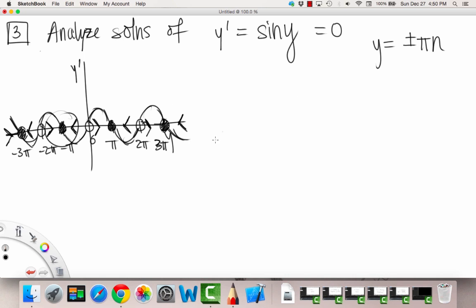So the phase line looks something like this. So we have, this is our y, and we have 2 pi. Here I'll label them right after. So 0, pi, 2 pi, negative pi, and negative 2 pi.